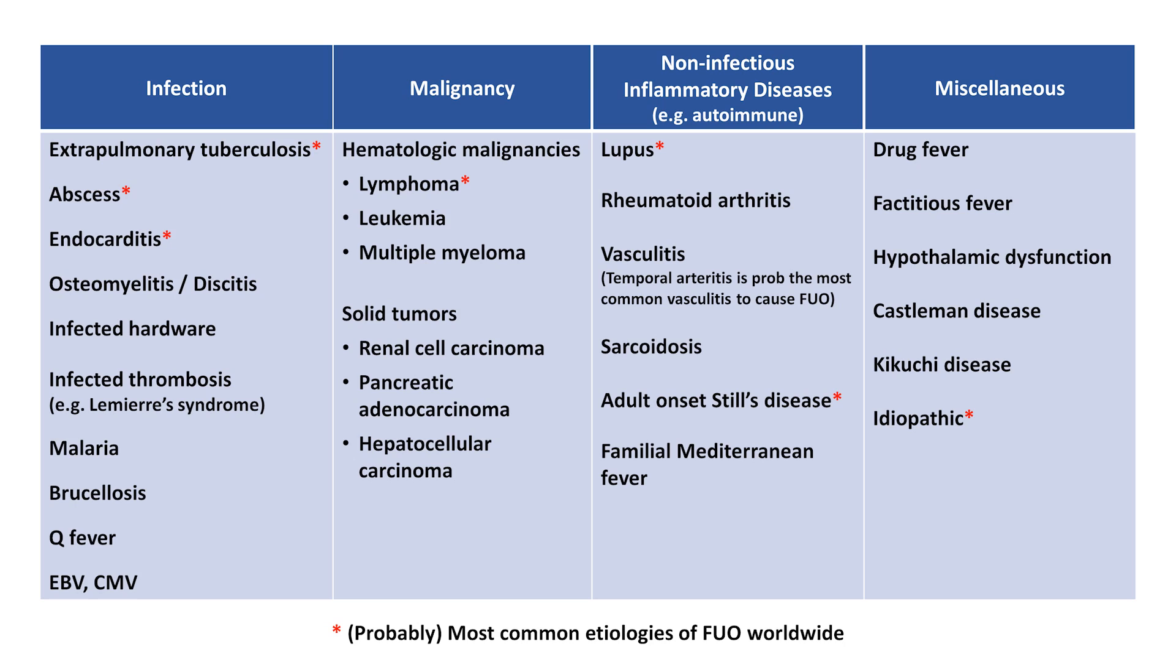Adult-onset Still's disease is not a common disease overall, but FUO is one of its most common presentations, whereas a disease like rheumatoid arthritis has a much higher prevalence, but few RA cases present as FUO.